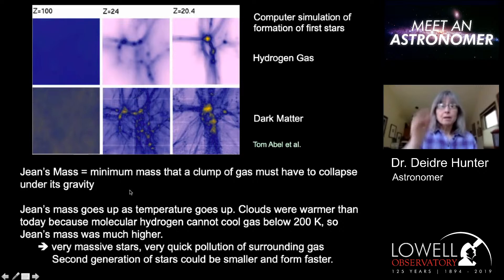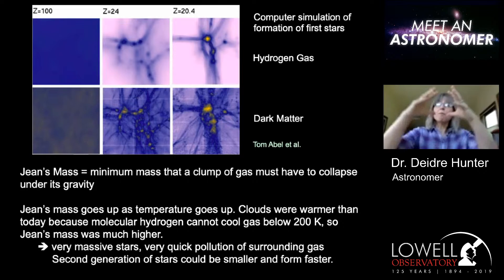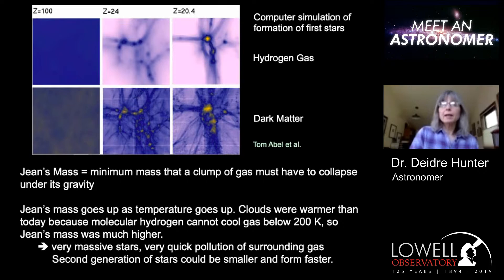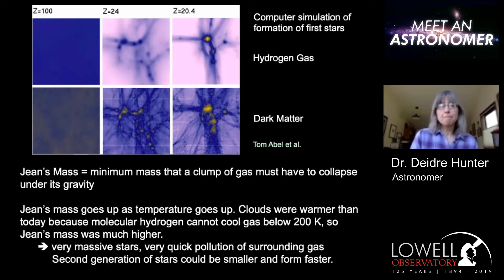Something very interesting: the Jeans mass is the minimum mass that a clump of gas must have in order to collapse under its own gravity. This Jeans mass goes up as the temperature goes up — the hotter your cloud of gas, the more mass you have to have in order for gravity to pull it together to make a star. The first clouds only had molecular hydrogen to cool them, and we believe molecular hydrogen couldn't cool below about 200 Kelvin. So the clouds were hotter than the molecular clouds we have today, meaning the Jeans mass was much higher.